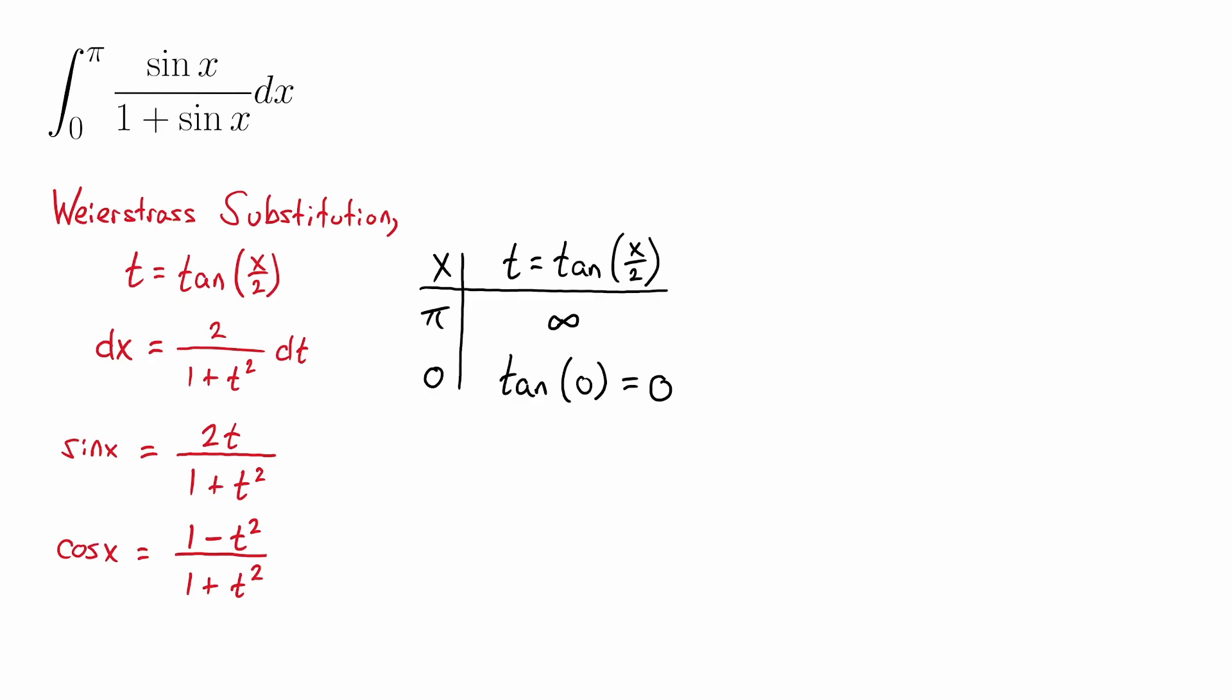We're now ready to convert everything using the Weierstrass substitution. So what we just worked on most recently is that our original integral with limits from 0 to π now converts to a t integral with limits from 0 to positive infinity. We know how to replace sine of x. That becomes 2t divided by 1 plus t squared. And we do that in both the numerator and denominator. And don't forget to also replace dx.